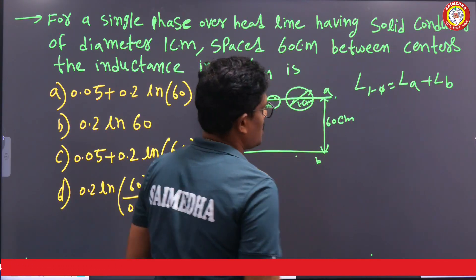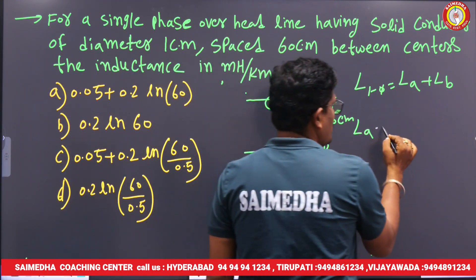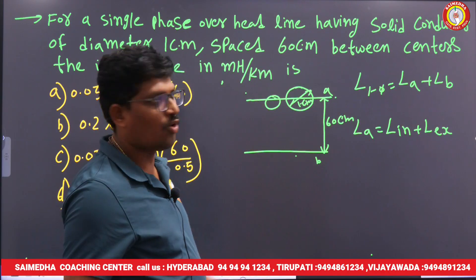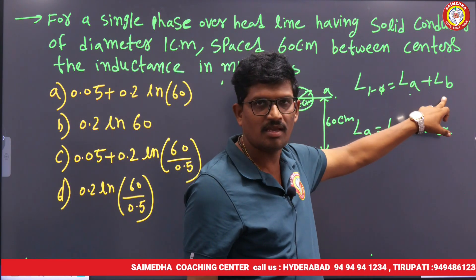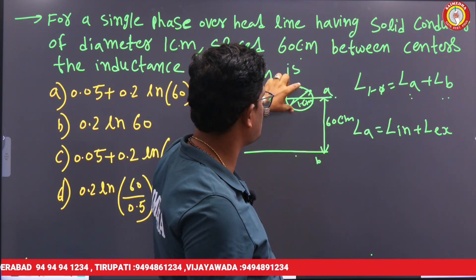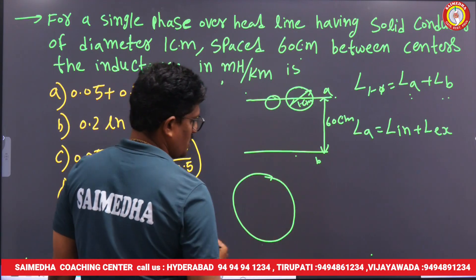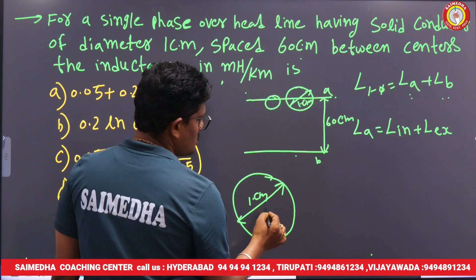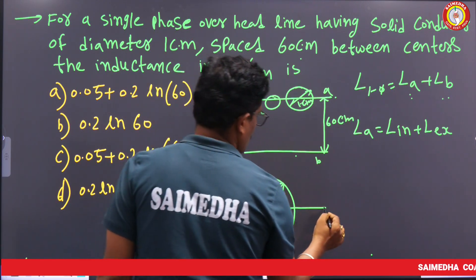For a single conductor, the total inductance is the sum of internal inductance and external inductance. This is conductor A with radius 1 cm. The center-to-center spacing is 60 cm. We need to find the inductance value in a single conductor.